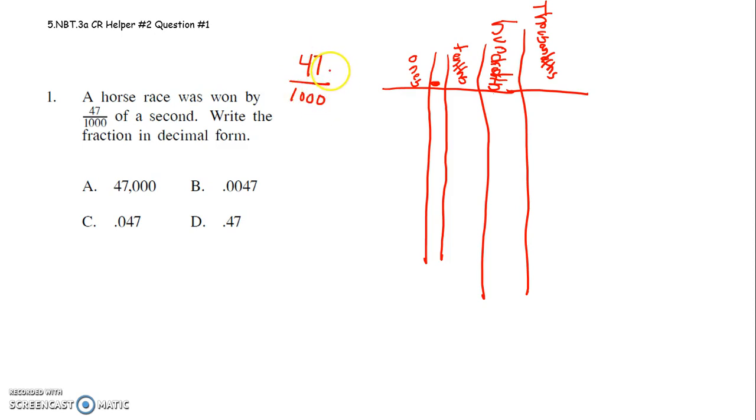That means your number will have to end in the thousandths place. So 47 thousandths, that number has to end in the thousandths place. So the last digit here has to be in the thousandths place.